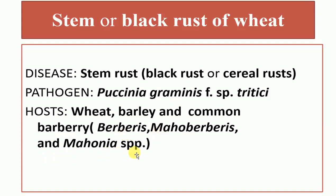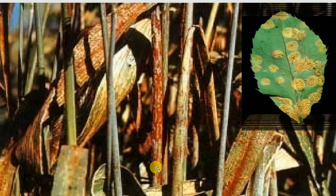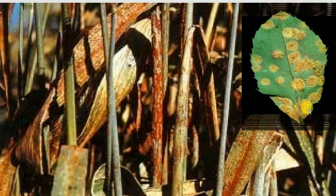Here you are seeing the brown-colored stem which shows the black rust of wheat on the stem and on leaves. On leaves it shows a yellow rust-like structure, and this is known as the black rust of wheat.